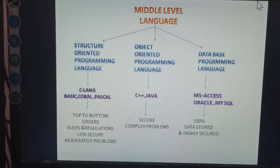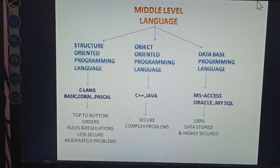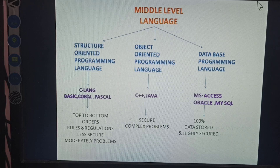Database programming language includes MS Access, Oracle, and SQL. It provides 100% data storage and high security. For example, the Internet — it is secured so another person cannot open it. This is called middle level language. In middle level language, the high level language is converted into binary so the computer can easily understand human language.